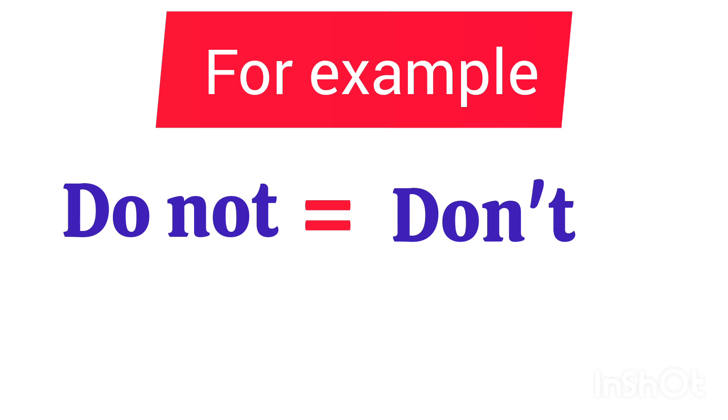For example, the contraction of do not is don't. You simply combine the words do and not and replace the o with an apostrophe. So, do not becomes don't.